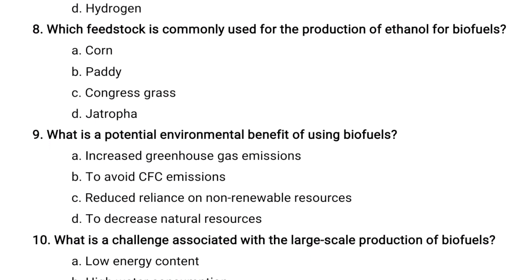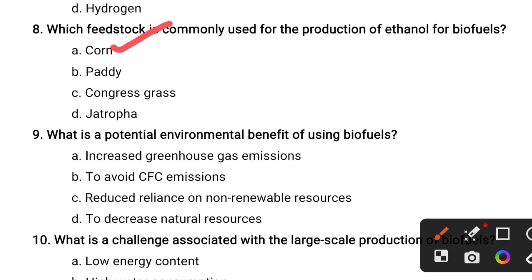Which feedstock is commonly used for the production of ethanol for biofuels? Options are: corn, paddy, congress grass, jet dropper. The correct answer is the first one — corn is generally used as a feedstock for the production of ethanol. Let's see the next question.